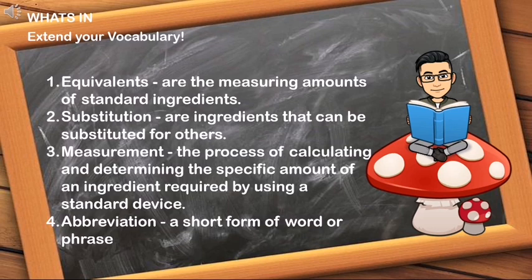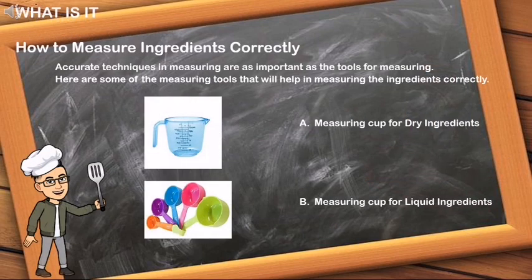Equivalence: the measuring amounts of standard ingredients. Substitution: ingredients that can be substituted for others. Measurement: the process of calculating and determining the specific amount of an ingredient required by using a standard device. Abbreviation: a short form of a word or phrase. Let us start our discussion on how to measure ingredients correctly.